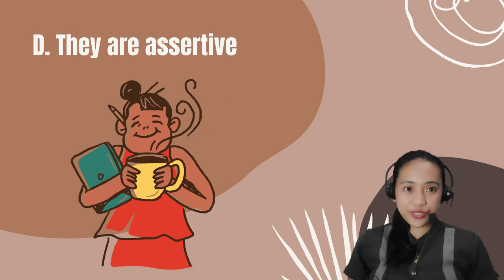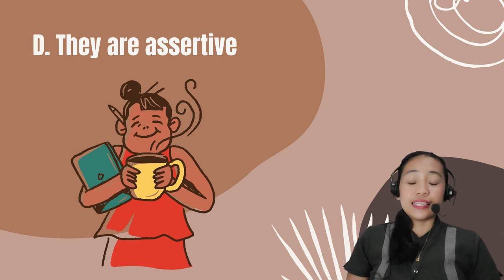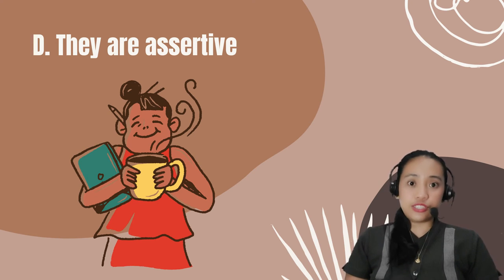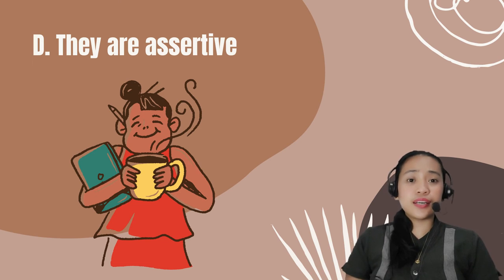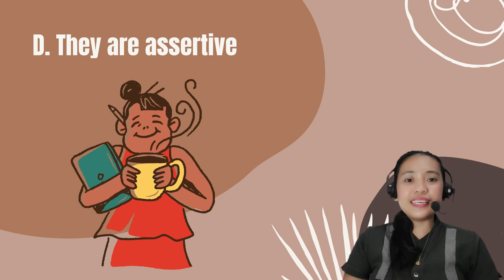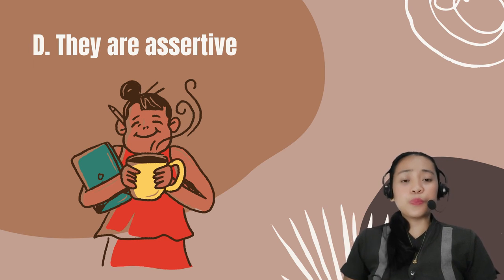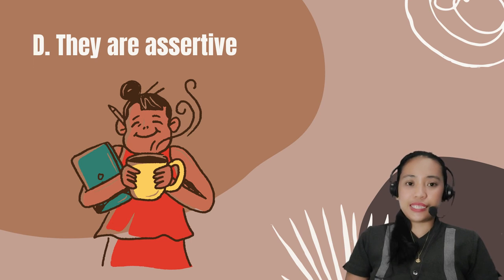The correct answer is Letter D. 'Terrible twos' according to Erikson denotes assertiveness of children at this age. One of the key skills during the terrible twos is the ability to use the powerful word 'no.' It may be painful for parents but it develops important skills of the will.